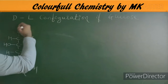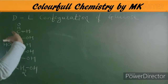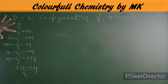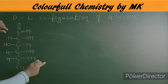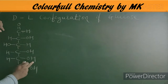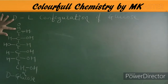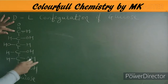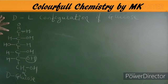To determine D or L configuration, look at the carbonyl group — it is the aldehyde carbon. Count from the carbonyl carbon; the last but one carbon (penultimate carbon) — if this carbon has the OH group on the right side, that is called D-glucose.